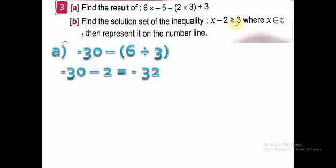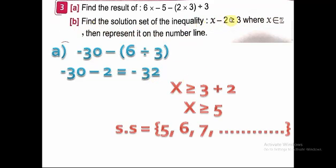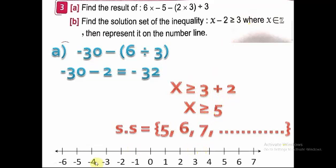Part B: find the solution set of the inequality x − 2 ≥ 3, where x belongs to Z, then represent it on the number line. I get x by itself — move −2 to the other side with the opposite sign: x ≥ 3 + 2, so x ≥ 5. The solution set is {5, 6, 7, ...}. On the number line, I put a closed circle on 5, then on 6, 7, and so on to infinity.